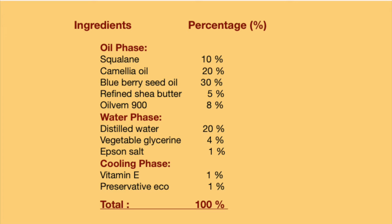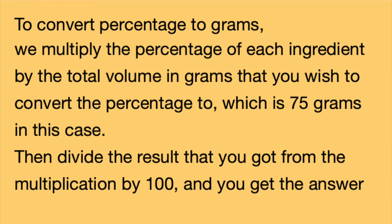We have to convert each ingredient from percentage to grams. When converting a formula from percentage to grams, there are two important points you have to take note of: the first point is the percentage of each ingredient, and the second point is the total amount of grams you want to convert the formula to. To convert percentage to grams, we multiply the percentage of each ingredient by the total volume in grams — which is 75 grams in this case — and then divide the result by 100 to get the answer.